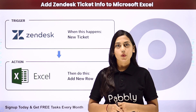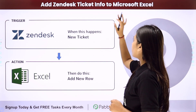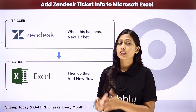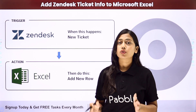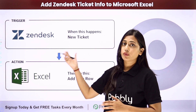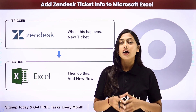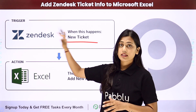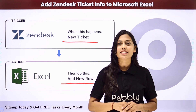Hello everyone. In this video we are going to learn how to add Zendesk tickets info to Microsoft Excel, which means that as soon as a new ticket is raised in your Zendesk, then automatically your Microsoft Excel worksheet will be updated with that record of the ticket. In this automation that we are going to create using Pably Connect, our trigger will be the new ticket raised in Zendesk and our action will be the new added row in Microsoft Excel.